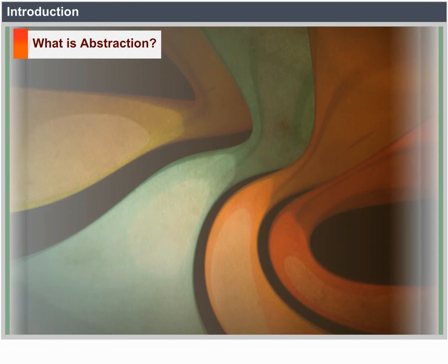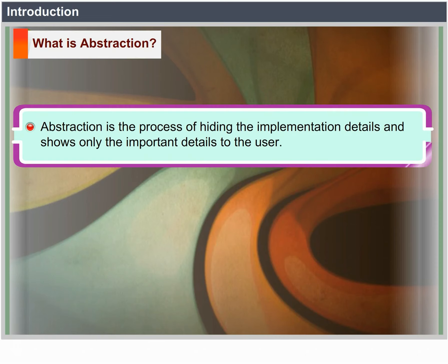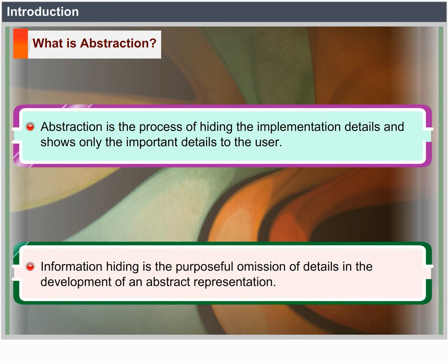Introduction: What is abstraction? Abstraction is the process of hiding the implementation details and it shows only the important details to the user. Information hiding is the purposeful omission of details in the development of abstract representation.